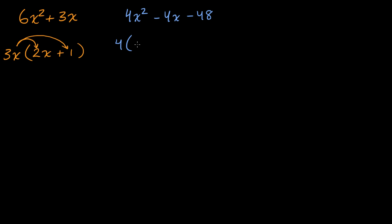This would be the same thing as 4 times x² - x - 12. I just divided each of these by four, and I factored it out. You can distribute the four and verify that these two expressions are the same. Now, are we done? Well, no, we can factor what we have inside the parentheses. We can factor this further.